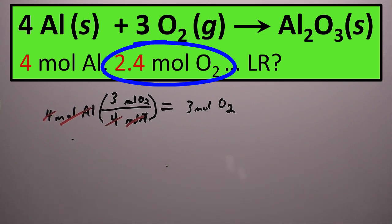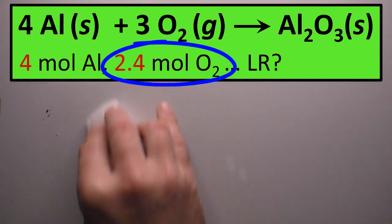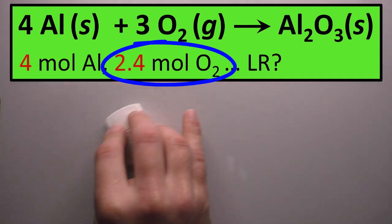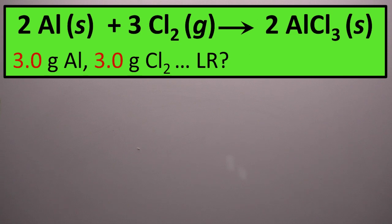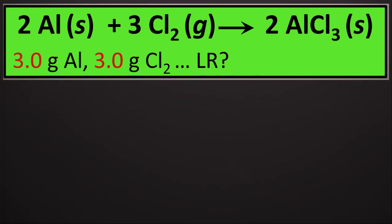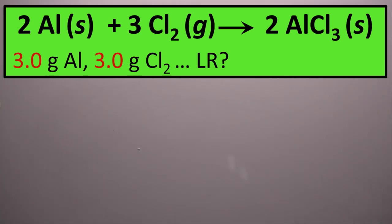Let's go ahead and do the other example. This next example is a little bit more complicated, based on a balanced chemical equation where we have 2 moles of aluminum reacting with 3 moles of chlorine to produce 2 moles of aluminum chloride. The problem tells us we have 3.0 grams of aluminum and 3.0 grams of chlorine. This problem isn't as simple as the first one because our starting quantities are in grams, not in moles.